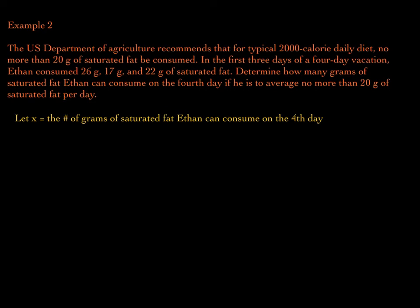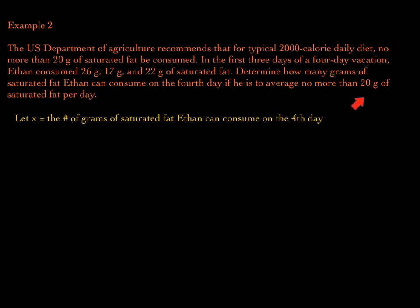Remember how you determine the average: you add up all of the numbers, then divide by how many numbers there are. In this case, we have four different numbers because it's a four-day vacation. So we have 26 plus 17 plus 22 plus X — the fourth day — divided by 4. That gives us the average, and the average must be no more than 20 grams per day. He can have 20 grams per day but nothing more than that on average. So 20 grams is the max per day.